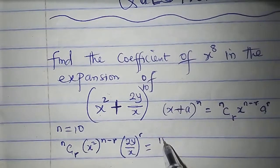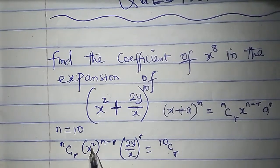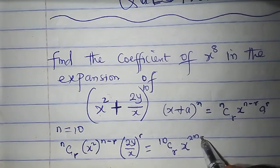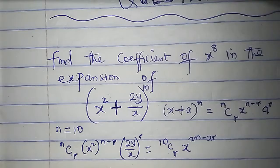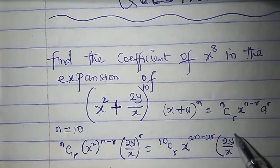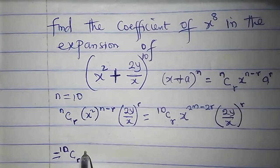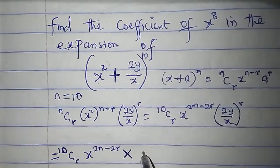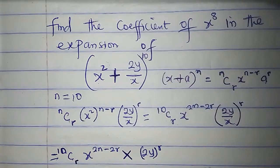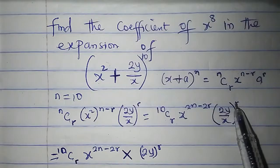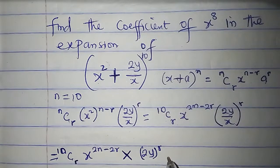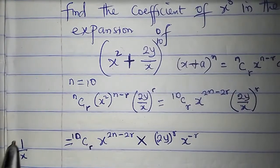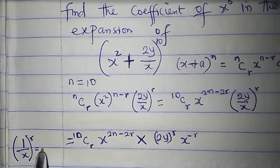n is already 10, so we can say 10 combination r. Now I want to expand this: x squared to the power of (n minus r) gives x to the power of 2n minus 2r. Then 2y all over x raised to the power r — this x will also carry a power of r. But if I reciprocate it, it will be x to the power of negative r. You know that 1 over x to the power r is the same as x to the power of minus r.